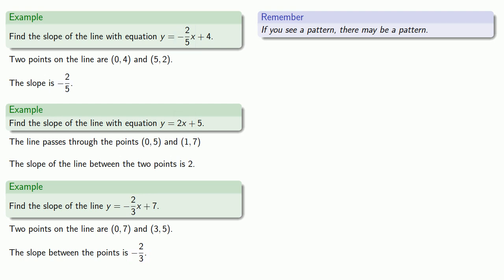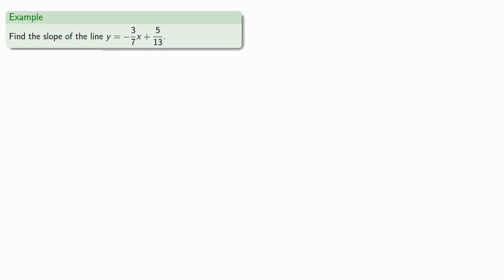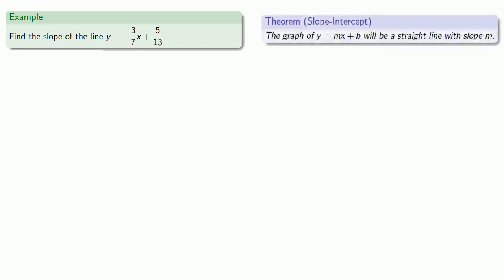We get the following useful result: the graph of y equals mx plus b will be a straight line with slope m. For example, suppose we want to find the slope of y equals negative 3/7 x plus 5/13. If we forget the theorem, we can find the slope by finding two points — the theorem just saves time. But we should read the fine print: this only works if the equation is in the form y equals mx plus b. Our equation is in that form, so the slope is the coefficient of x, which is negative 3/7.